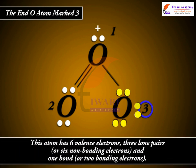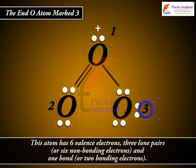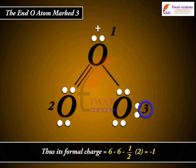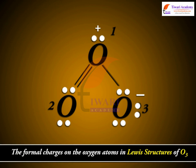The end O atom marked 3. This atom has six valence electrons, three lone pairs or six non-bonding electrons, and one bond or two bonding electrons. Thus, its formal charge is equal to six minus six minus one by two into two is equal to minus one. Therefore, the formal charges on the oxygen atoms in Lewis structures of O3 given above are written as shown.